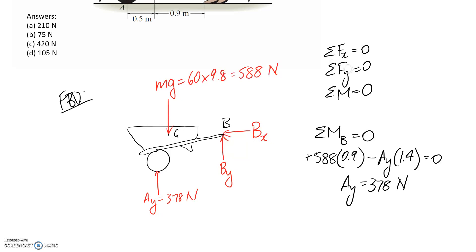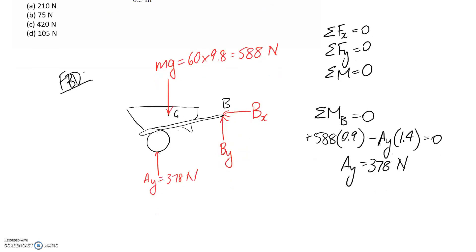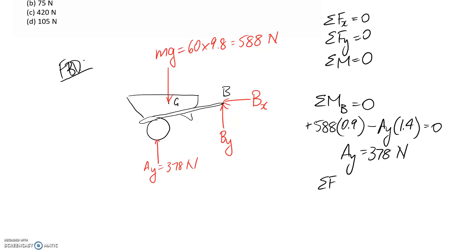All right, so now we can go back and apply our other two equations to figure out these Bx and By. So if I start by summing forces in the x direction this comes out pretty easy. We've got only Bx acting in that direction so it's just going to have to be directly equal to 0.